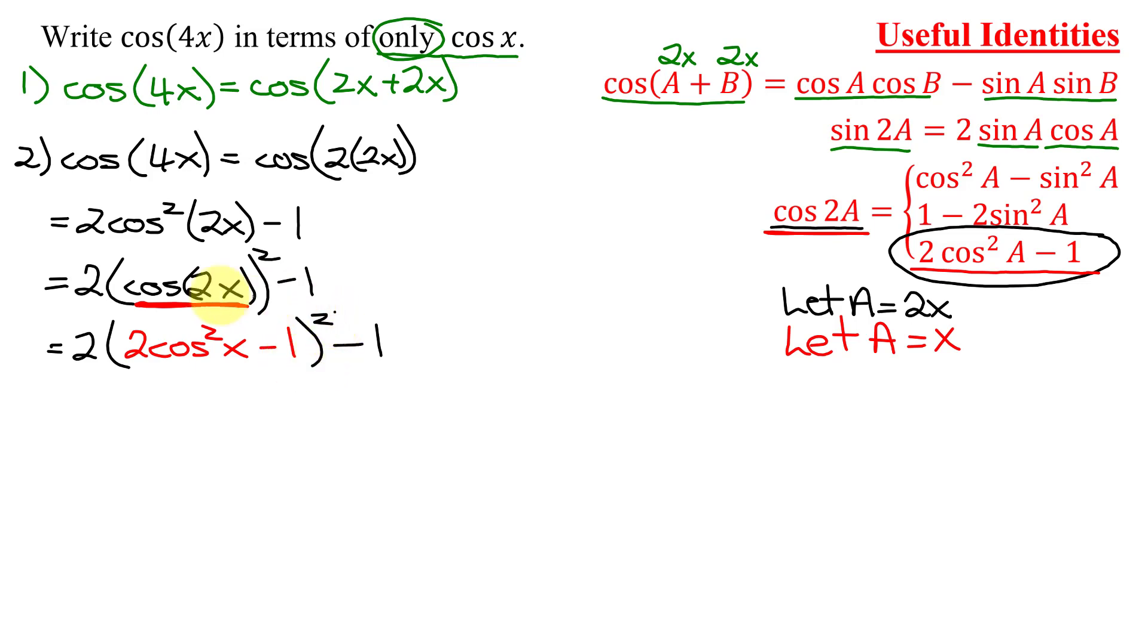Next, I need to square this binomial. I'm going to do it by the longer method of foiling it. So I'm going to have 2 cosine squared x minus 1 times 2 cosine squared x minus 1. And then don't forget the minus 1 on the end. So I'm going to have 2 times 2 cosine squared x times 2 cosine squared x is 4 cosine to the 4th x.